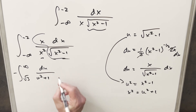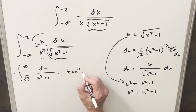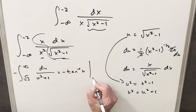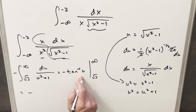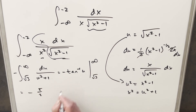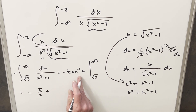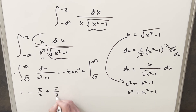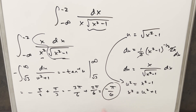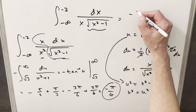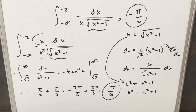The integral becomes du over u squared plus one, which is just arctan. With the minus sign in front we evaluate arctan(u) from square root of three to infinity. Arctan of infinity is pi over two, and arctan of square root of three is pi over three. Getting a common denominator: minus three pi over six plus two pi over six gives a solution of minus pi over six. So we were close in the first approach but just missed this minus sign. Our solution is minus pi over six.